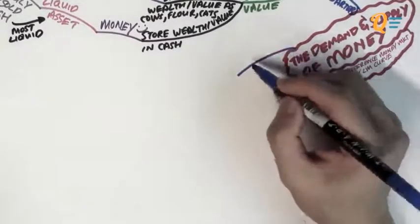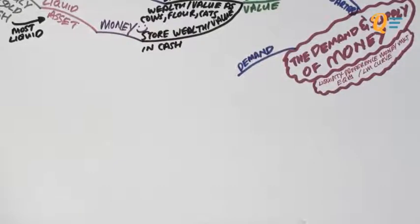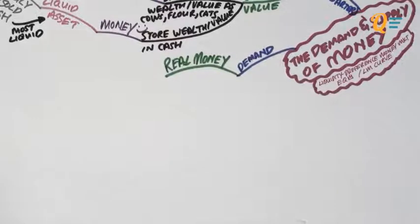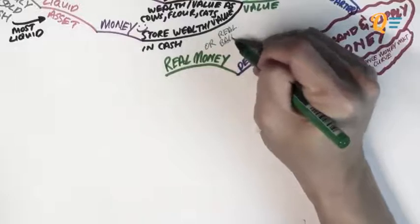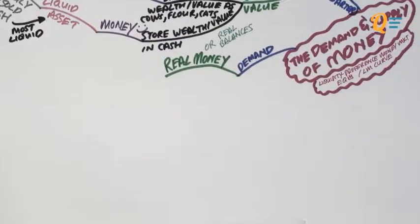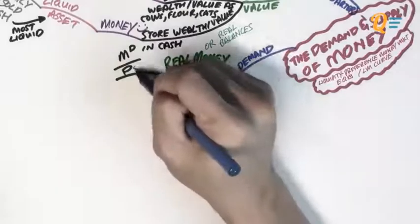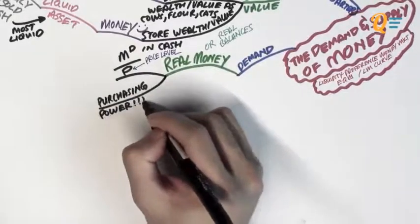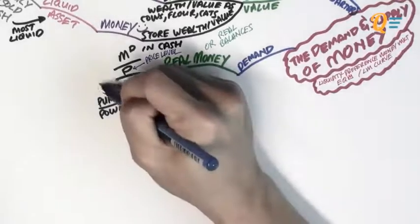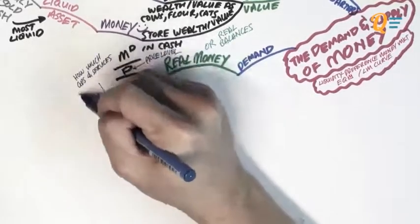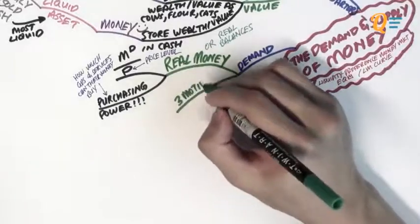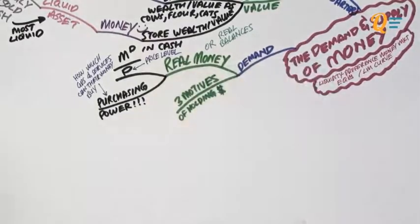Now that we've got the basics of money out of the way, we can talk about the demand for money — specifically how an economy of people demands money. Here we're talking about real money, also known as real balances. Real money is basically the amount of money demanded over the general price level P. We use real money demand because people care about their purchasing power more than the nominal amount of money they have. Purchasing power tells them how much goods and services their money can buy. What's the worth of having a million dollars when you can only buy a pack of rice with it?